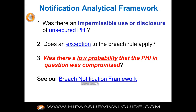The reason for going through the breach notification framework is that these rules are actually interdependent. There's a three-step analytical framework to determine whether there's been a breach. First: was there an impermissible use or disclosure of unsecured PHI? If yes, second: does one of the exceptions to the breach rule apply? The omnibus rule changed the definition of breach and added some exceptions. Third: was there a low probability that the PHI in question was compromised? That was also changed dramatically by the omnibus rule.